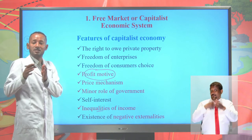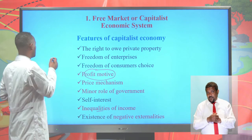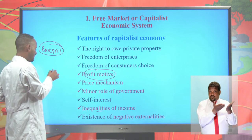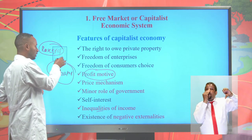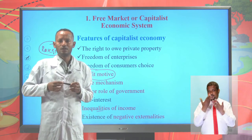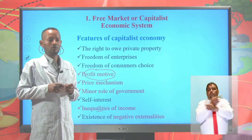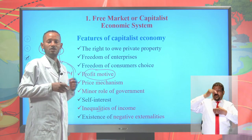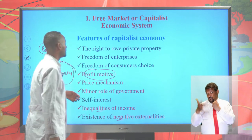If the action of one party benefits the other, there is positive externalities. For example, a rose grower engaged in producing flowers and a beekeeper — if the bees of the beekeeper use the flowers of the rose grower to make honey, that is positive externalities. For negative externalities: if an industry engaged in manufacturing emits carbon near residential areas, it affects the livelihood of individuals — that is negative externalities, one of the features of the capitalist economic system.